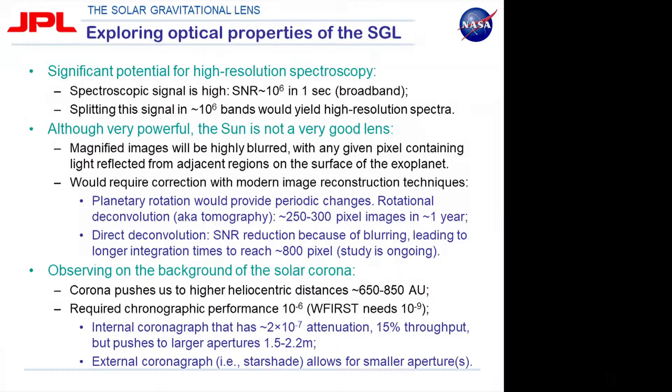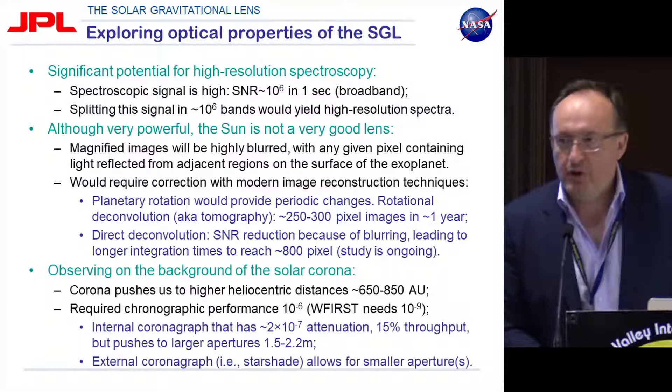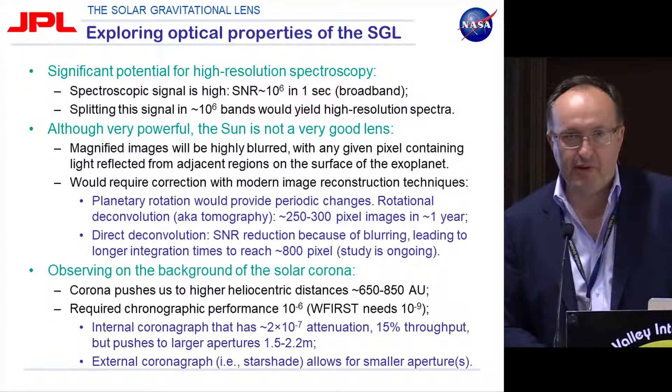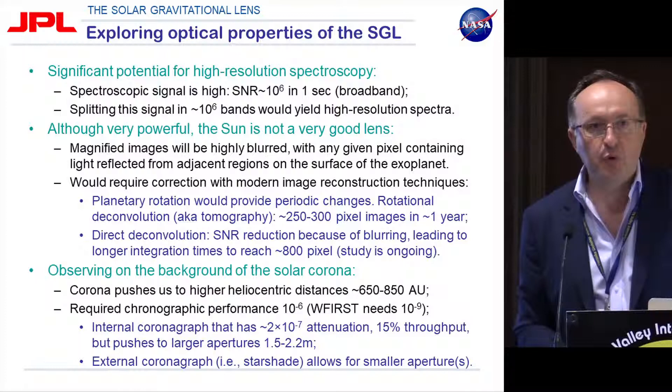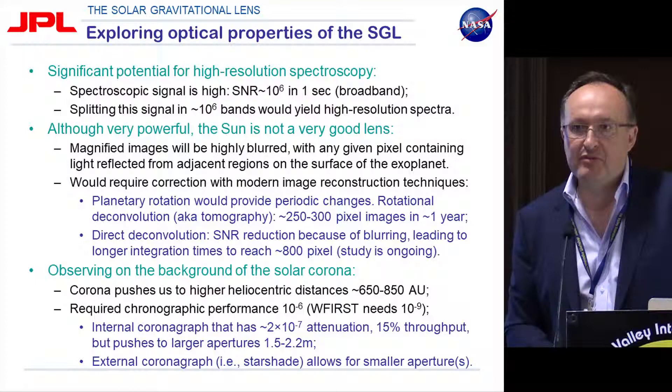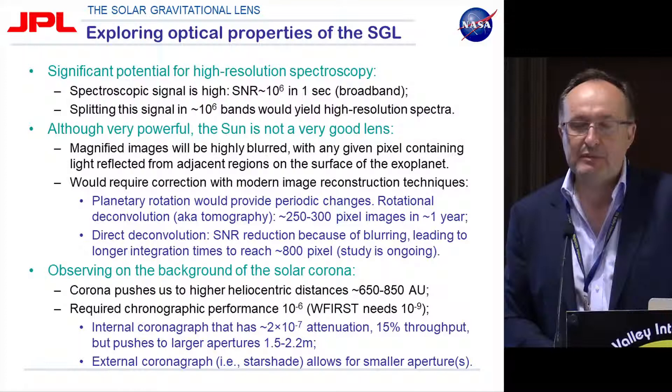I hope this movie gives you a better perspective on the promise of gravitational lensing. It is a very challenging way to image an exoplanet. One important point: the spectroscopic signal is extremely high — we get a signal-to-noise ratio of about a million within one second for spectroscopic signal coming from the entire planet. If we split this signal into a million bands, we can potentially get very good broadband spectroscopic investigation of an exoplanet's atmosphere.